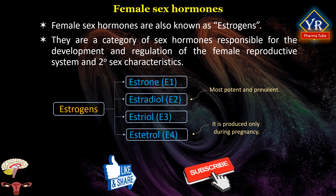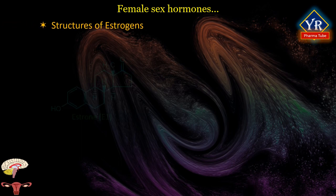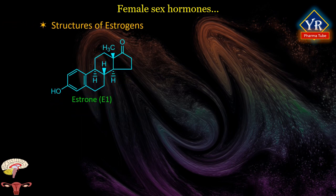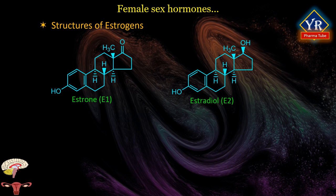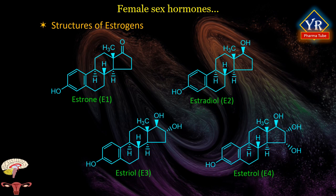In the abbreviated forms, the letter E stands for estrogen and the numbers 1, 2, 3, 4 indicate the presence of hydroxyl groups in their respective structures. The structures of four major naturally occurring estrogens in women — estrone, estradiol, estriol, and estetrol — are shown here.